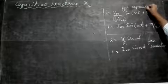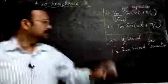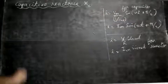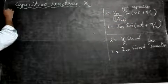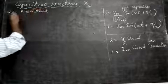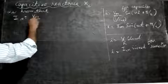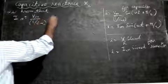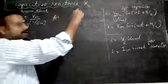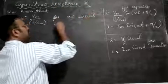We understand that Im = Vm / (1/Cω) for an AC circuit containing only a capacitor.